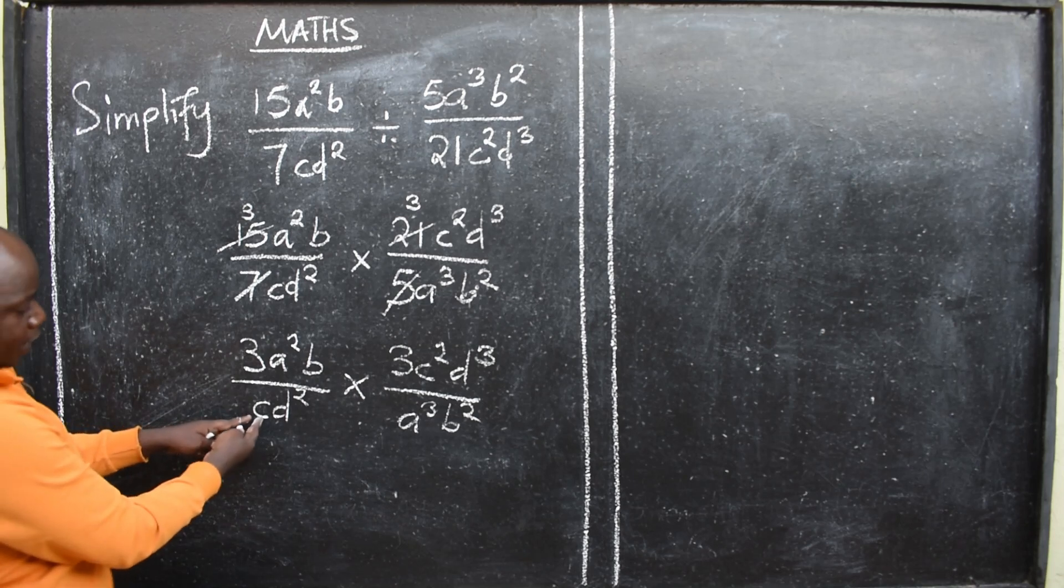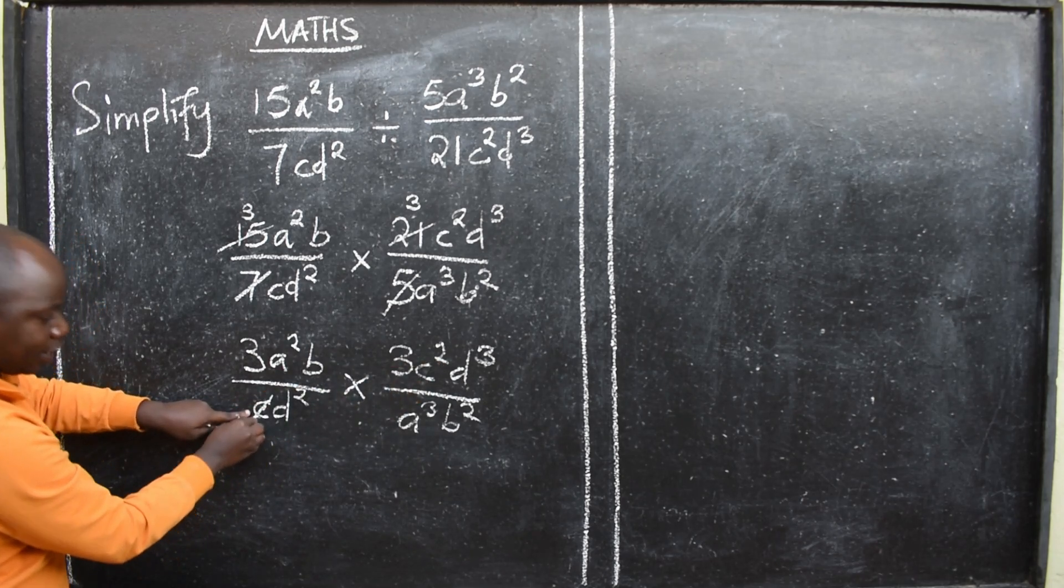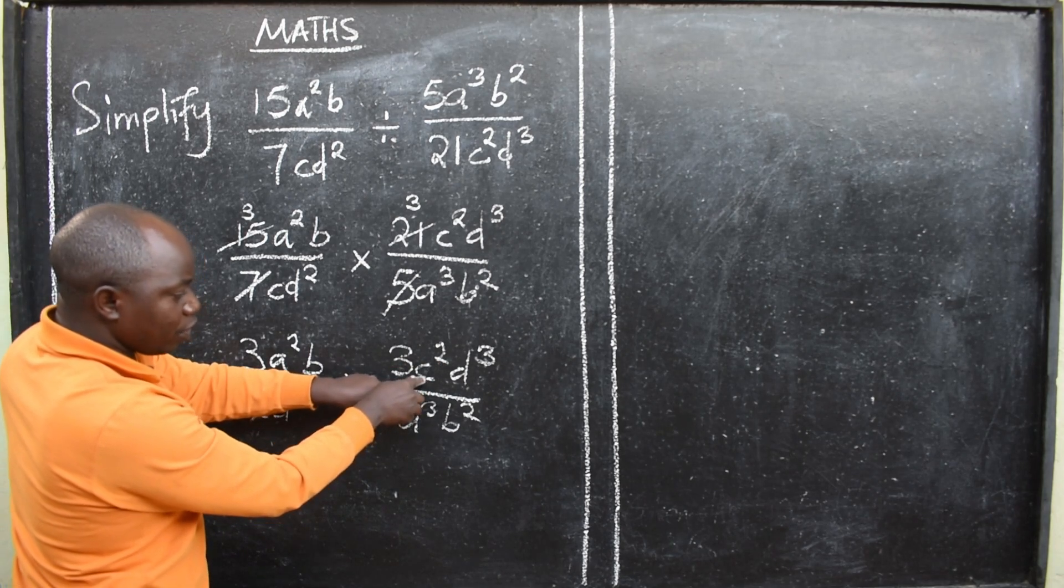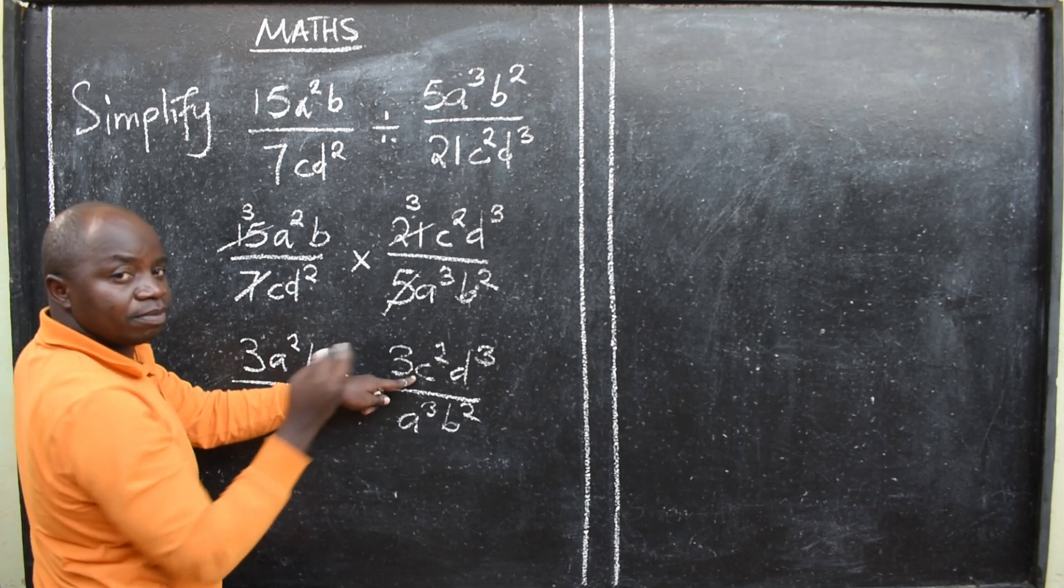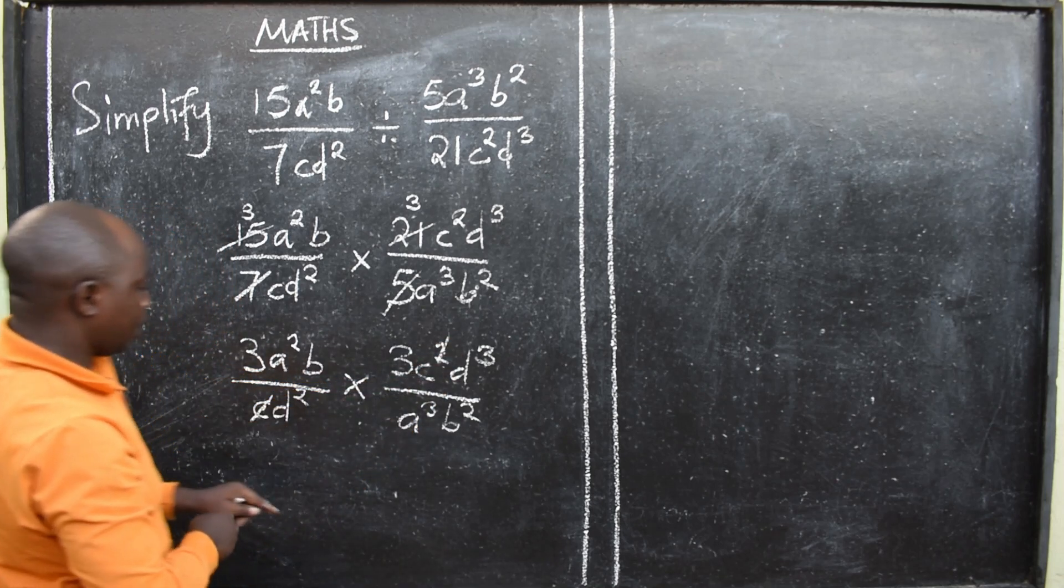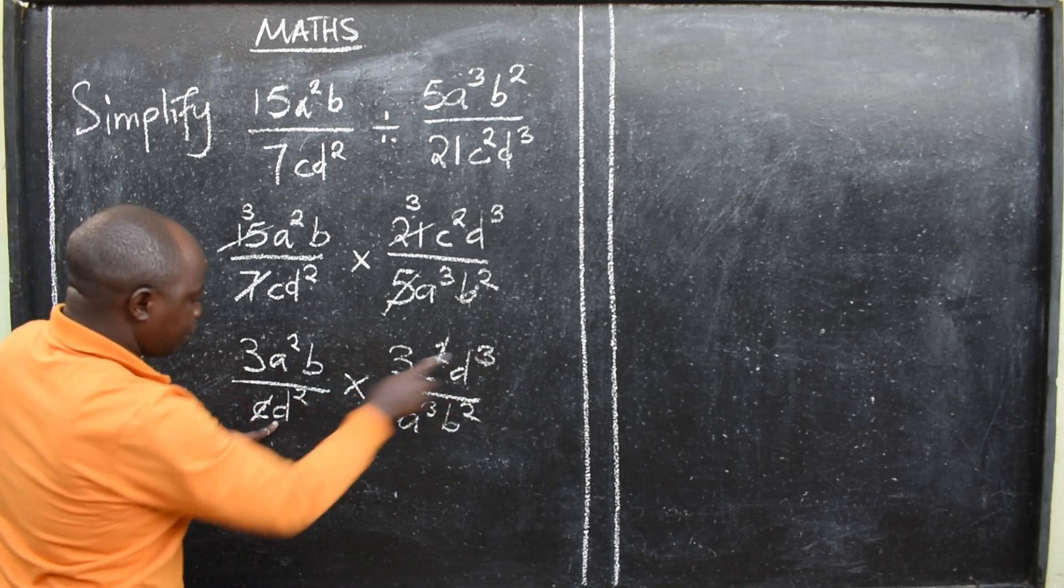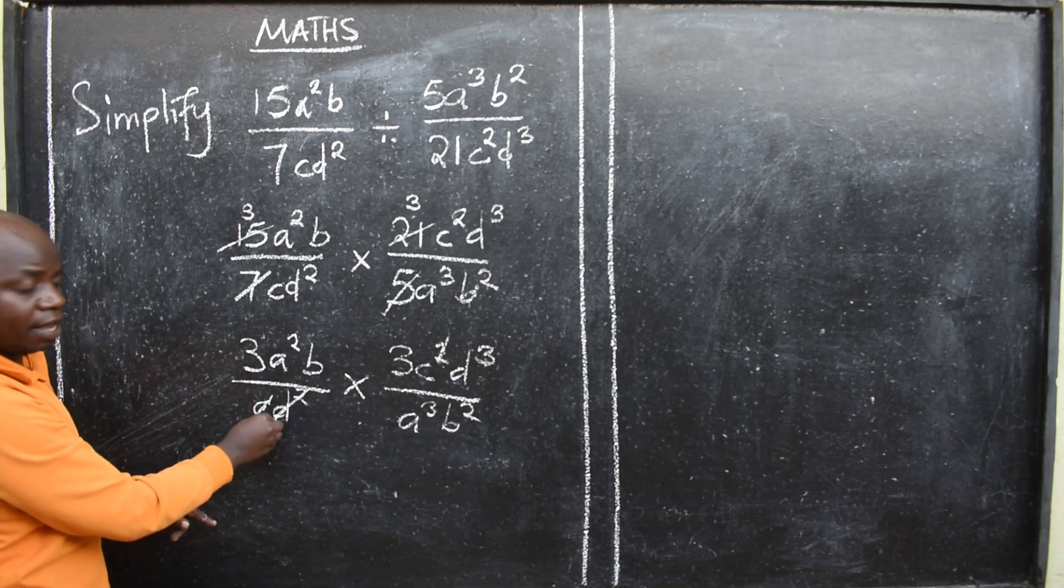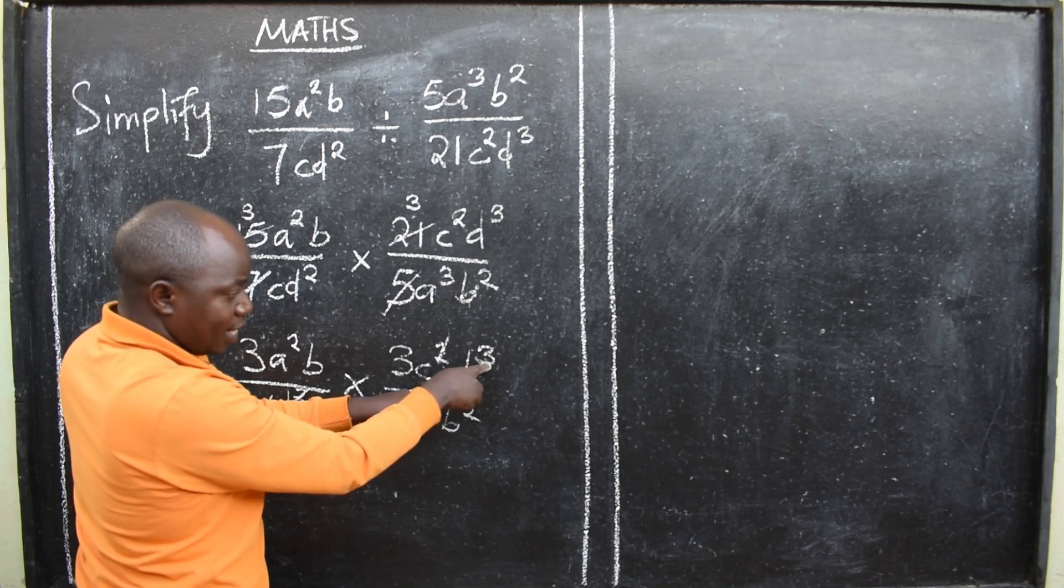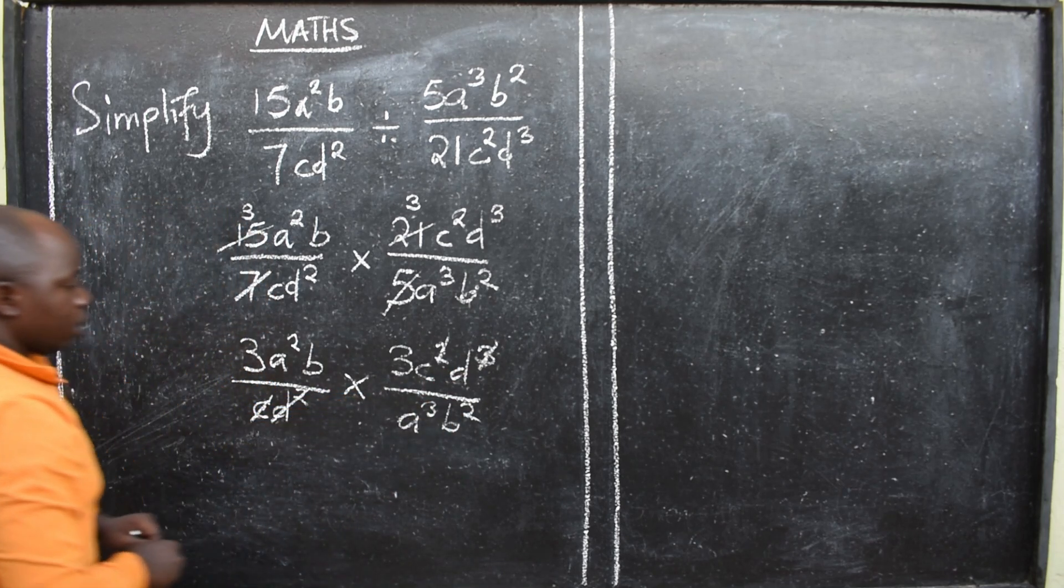I can start with, I have a c here and c². So this c will cancel. There are 2c here. C² means there are 2. So I'll cancel 1. I'll remain with 1. I have d² here. I have d³. So I'll cancel 2 of them here. I'll also cancel 2 here. There are 3. I'll cancel 2. I'll remain with 1.